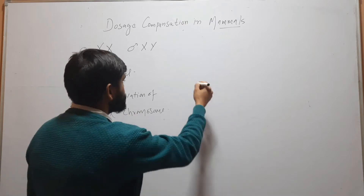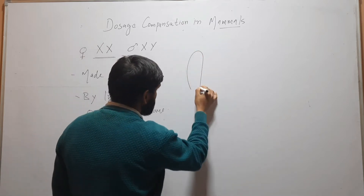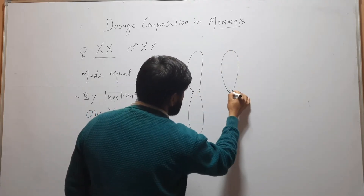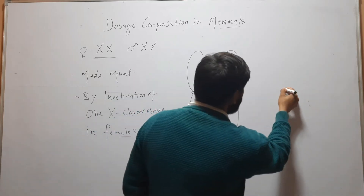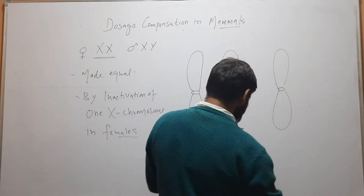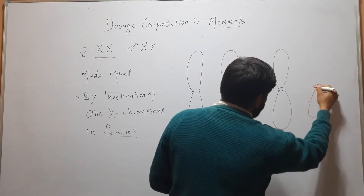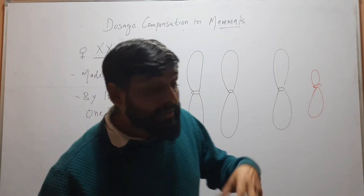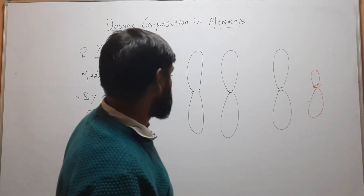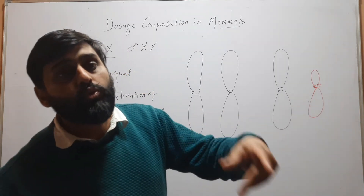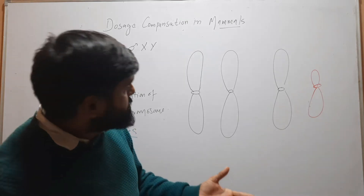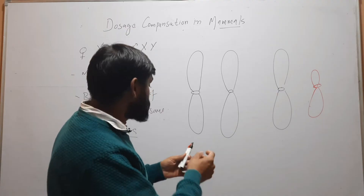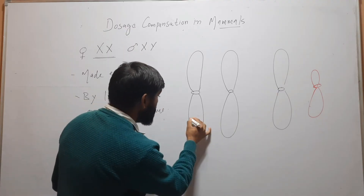Here we have one X chromosome and another X chromosome of the female. Females have two X chromosomes and males have one X chromosome plus a Y. The first step in inactivation is selection of an X chromosome. Out of the two X chromosomes in females, one will be selected, and this selection is random — in some cells this chromosome may be selected, in others the other chromosome.